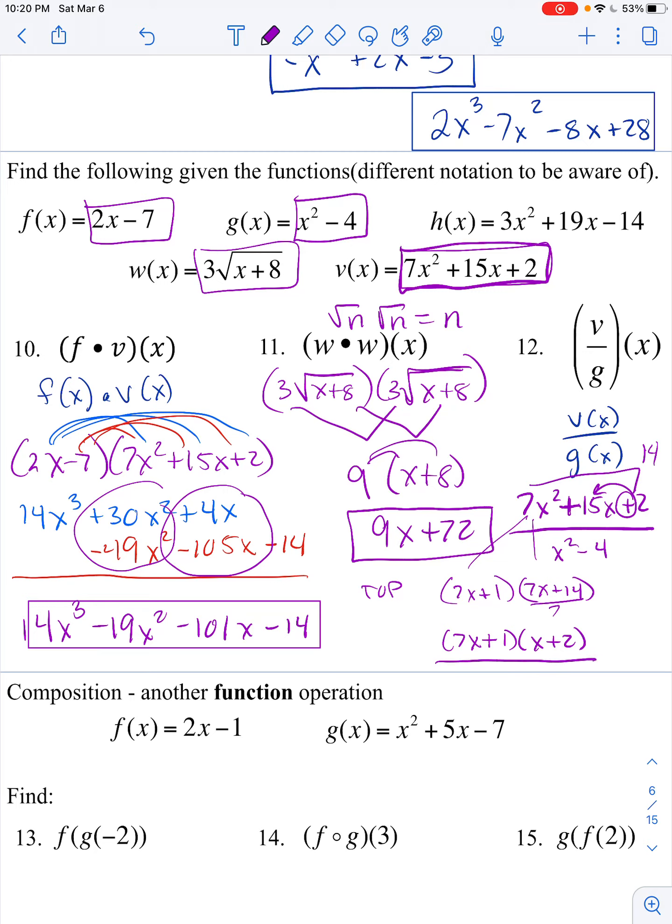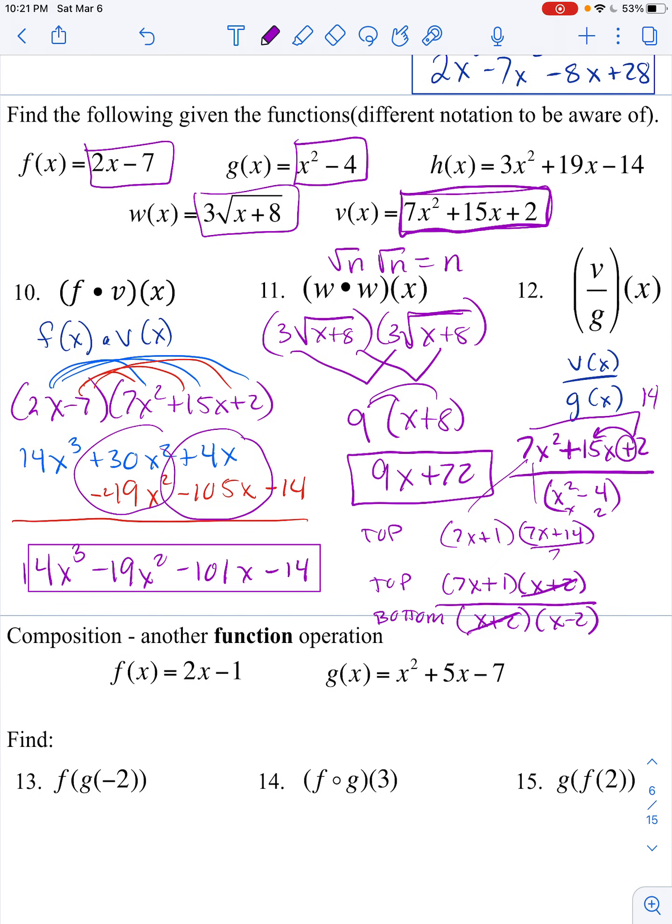The final factored version of the top looks like this. And then keep in mind what you learned a long time ago with factoring. The bottom is the difference of two squares. This is the square of x. 4 is the square of 2. So it breaks down into x plus 2, x minus 2. These cancel or reduce. So my final answer is 7x plus 1 over x minus 2.